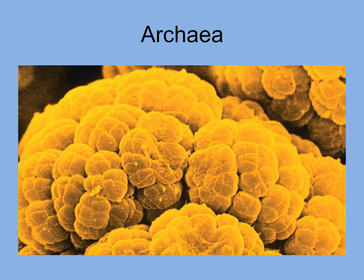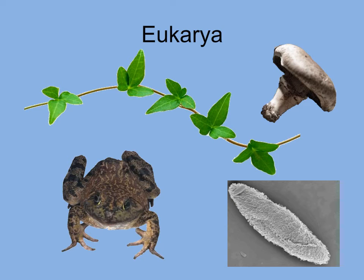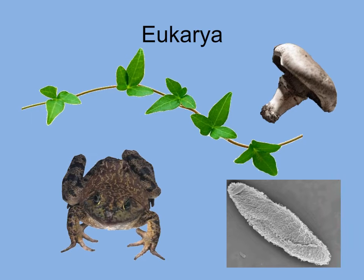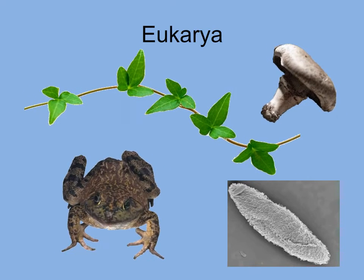The prokaryotes known as archaea live alongside bacteria in boiling hot springs and intestines. However, archaea are very different in one characteristic: only a few pathogenic archaea have been found. Last, but not least, is eukarya — other than bacteria and archaea, all other organisms are composed of eukaryotic cells. So all plants like this ivy, fungi like this mushroom, animals like this frog, and protists like this paramecium are in the domain Eukarya.